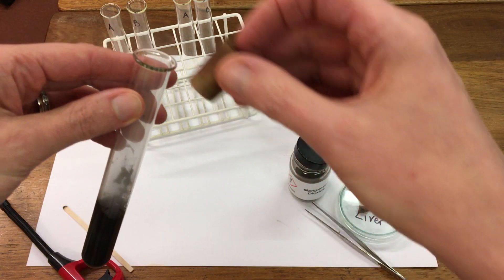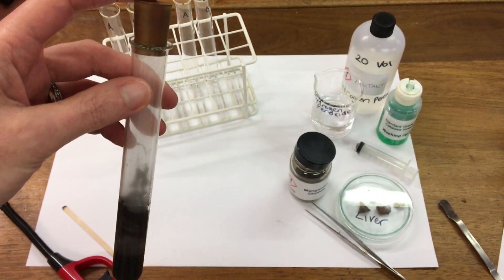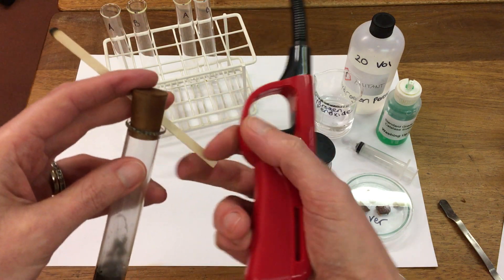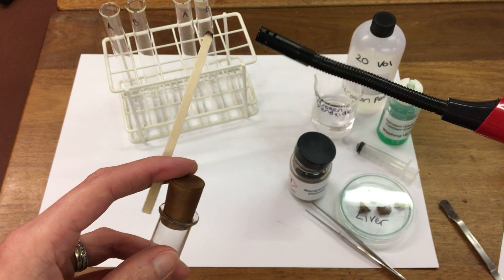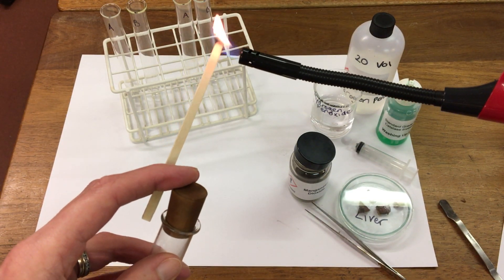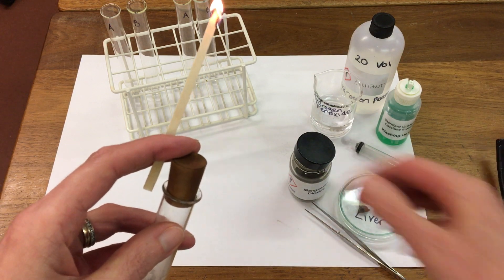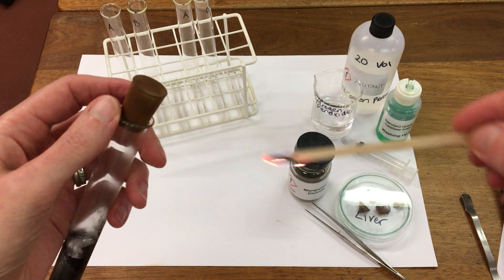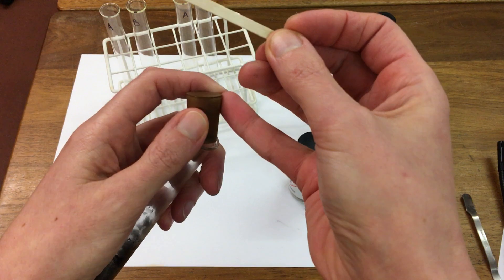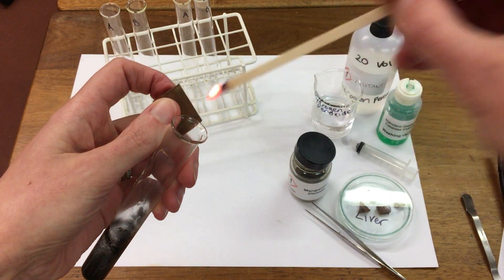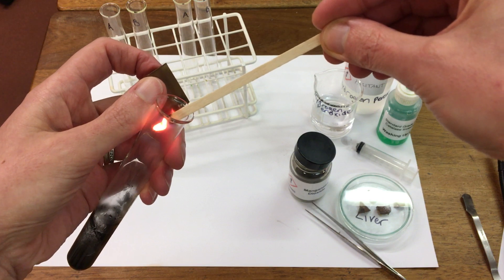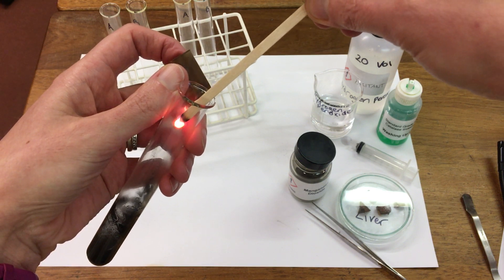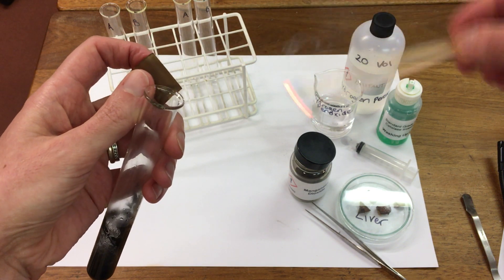Now I'm going to trap the gas being produced by using a stopper. We can then test this gas by using a glowing splint. So I'm going to light our splint. We'll then blow it out. We can see the gas being produced is relighting the glowing splint. This is the test for oxygen.